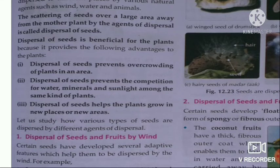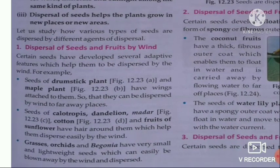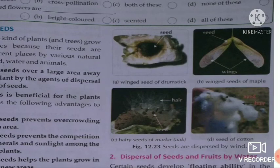The first agent of dispersal is wind. Certain seeds have developed adaptive features which help them to be dispersed by wind. Seeds of the drumstick plant and maple plant have wings attached to them, so they can be dispersed by wind to far-away places, as seen in the pictures showing the winged seeds of drumstick and maple.